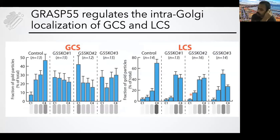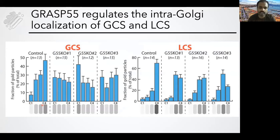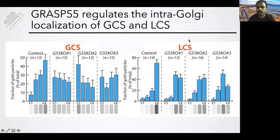We confirmed this by electron microscopy. The quantitation shows the presence of the enzyme in each cisterna of the Golgi — C1 is the cis side, C4 is the trans side. In control cells, GCS is mostly present on the trans side. When we knock down GRASP55 in all three clones, GCS is now equally distributed across the Golgi stack, or in some cases more on the cis side. Lactosylceramide synthase (LCS), though it moves from C4 to C3, does not redistribute as strongly as GCS does, but still moves towards the cis side of the Golgi.